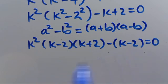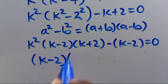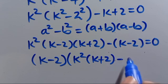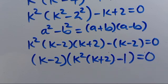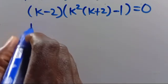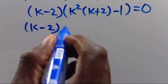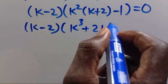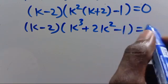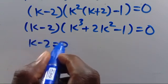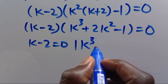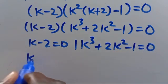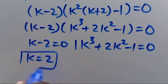Since (k - 2) is common, we factor it out: (k - 2)[k²(k + 2) - 1] = 0. Expanding the bracket gives (k - 2)(k³ + 2k² - 1) = 0. So either k - 2 = 0, giving us k = 2 as the first solution, or k³ + 2k² - 1 = 0.